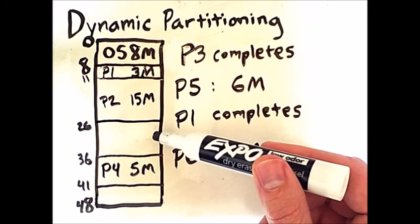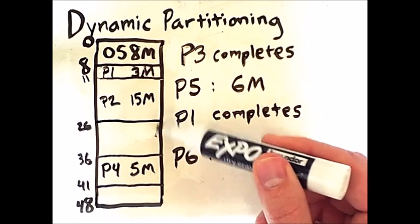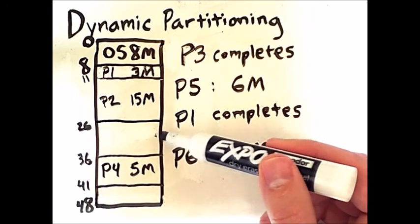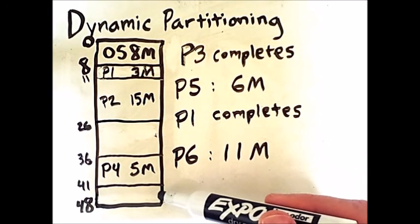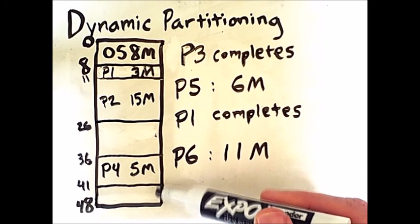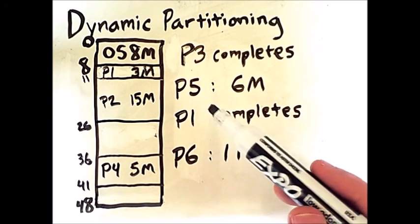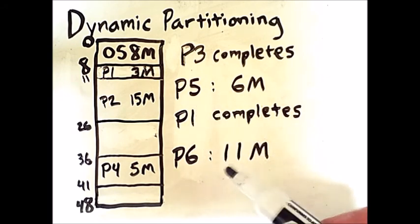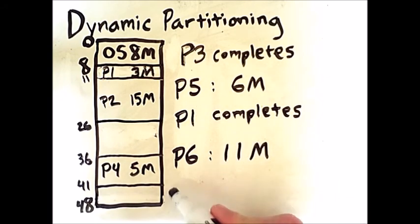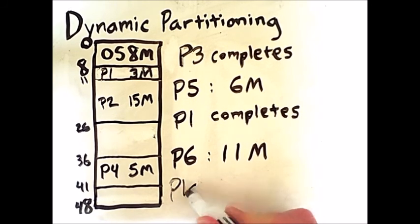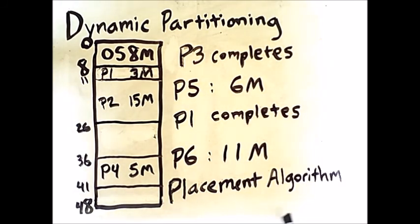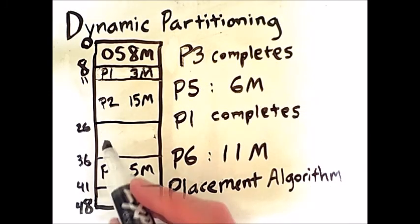Either here, where there are 10 available megabytes, or here, where there are 7 available megabytes. The decision of where to put process 5 depends on something called a placement algorithm. We'll return to this topic at the end of the video. But for now, let's simply assume that process 5 is placed here.